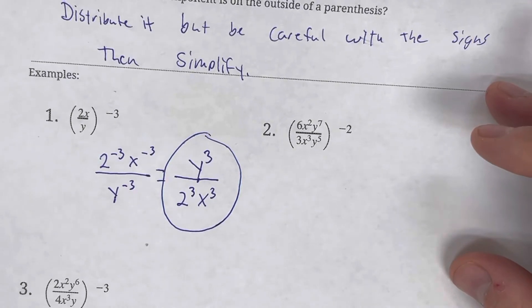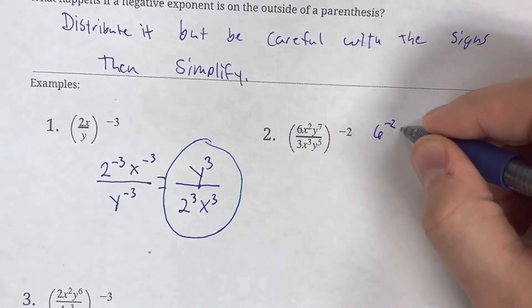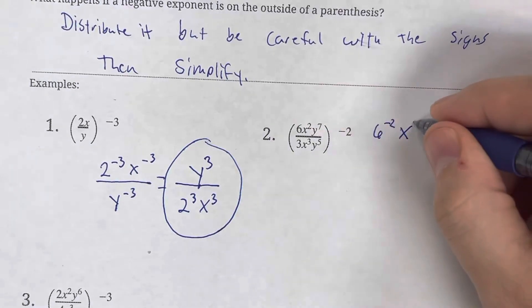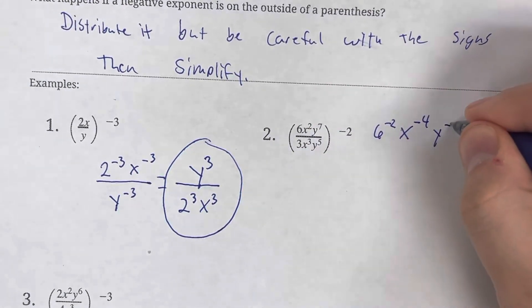Next one. Here we go. 6 to the negative 2nd, x negative 2 times 2 is negative 4, 7 times negative 2 is negative 14.